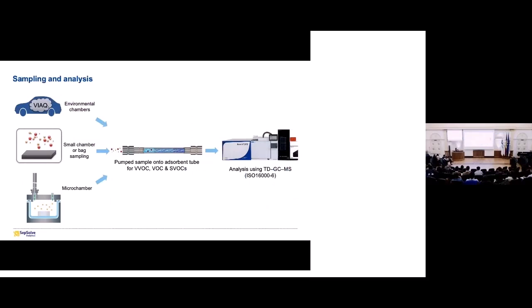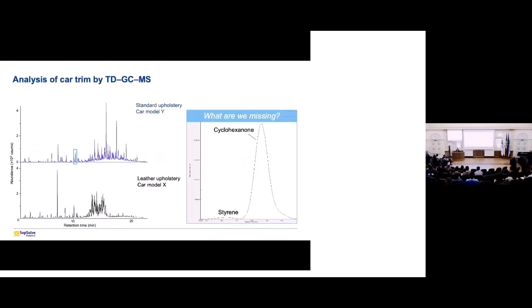So from any of the different sampling approaches, the VOCs and SVOCs can be trapped onto a sorbent tube. So that can contain a single sorbent or multibed sorbents before analysis by GC-FID or GC-MS, like we can see there. So that allows you to get an idea of what's in the interior air. We can see from this example, two different car models where we sampled two liters of the interior air onto a sorbent tube and then analyzed by GC-TOF-MS.